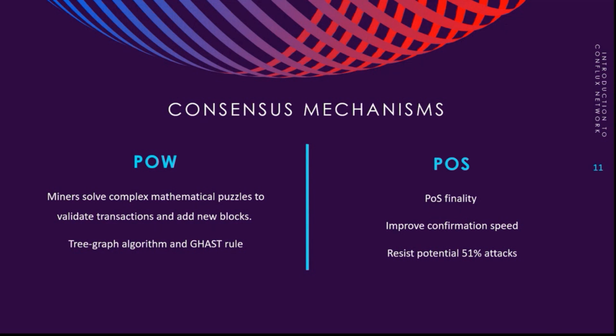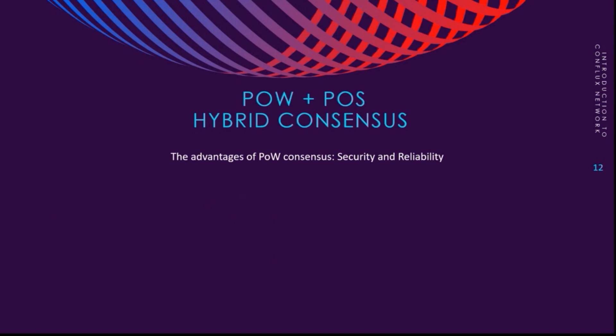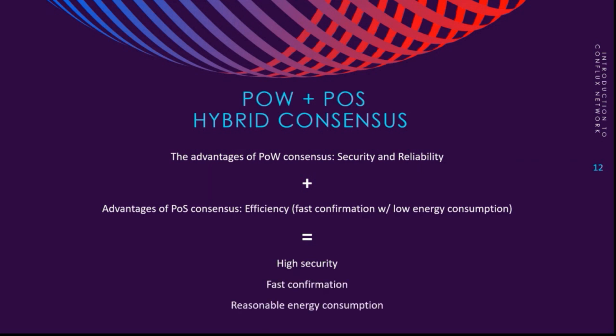Having both consensus mechanisms enables Conflux to get the benefits of both. We get the advantages of the Proof of Work consensus, which is security and reliability, plus the efficiency of the Proof of Stake consensus mechanism. This means high security, fast confirmation, and reasonable energy consumption.